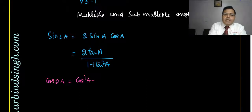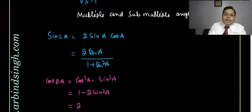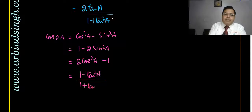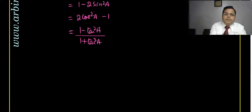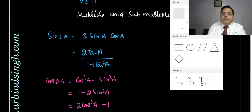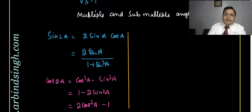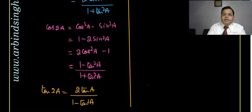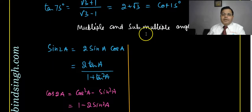The formula for cos 2A: cosine 2A equals cosine squared A minus sine squared A, or equivalently 1 minus 2 sin squared A, or 2 cos squared A minus 1. There is also the form: (1 minus tan squared A) upon (1 plus tan squared A). And for tan 2A: tan 2A equals 2 tan A upon (1 minus tan squared A).